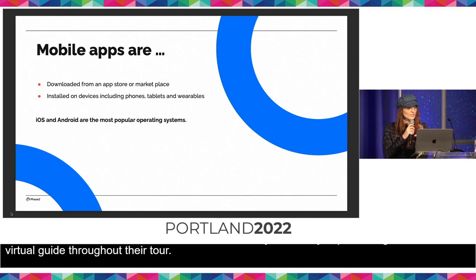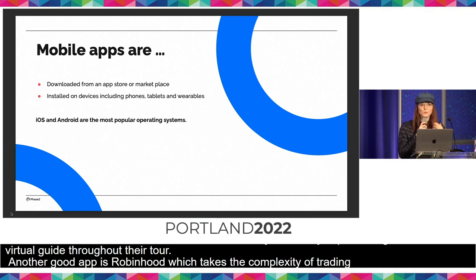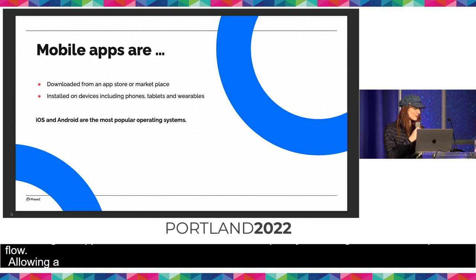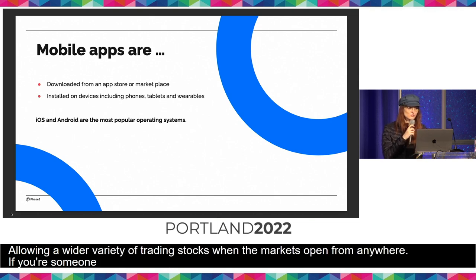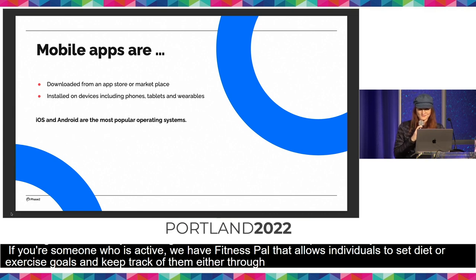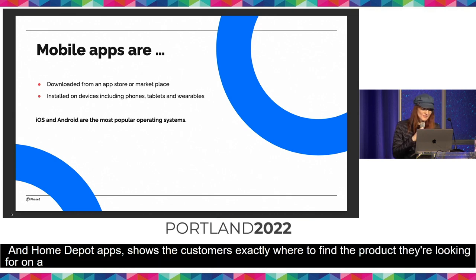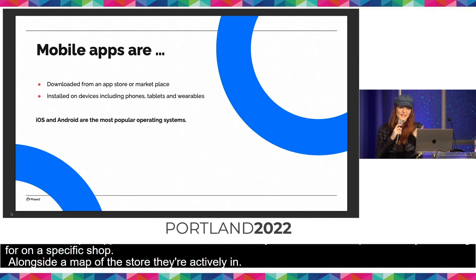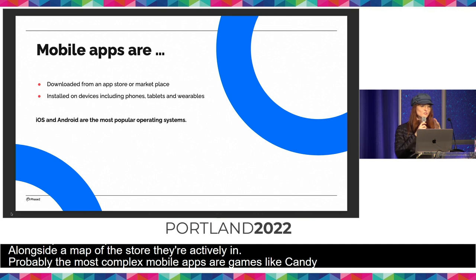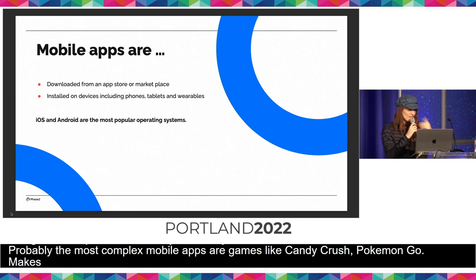Another good app is Robinhood, which takes the complexity of trading stocks and simplifies the flow, allowing a wider variety of individuals to trade stocks from anywhere when the market's open. There's also MyFitnessPal, which allows individuals to set diet or exercise goals and track them through location or Bluetooth pairing to wearable devices. And the Home Depot app shows customers exactly where to find a product on a specific shelf, alongside a map of the store they're in. The most complex apps are games like Candy Crush, Pokemon Go, and Angry Birds, which use AI and augmented reality.